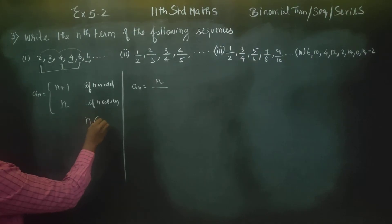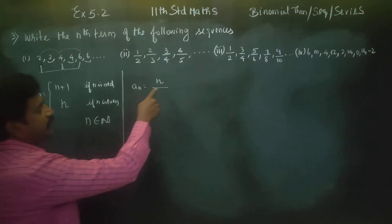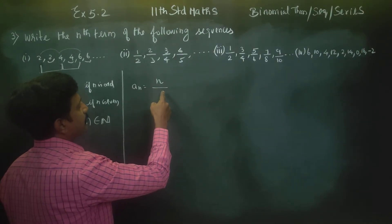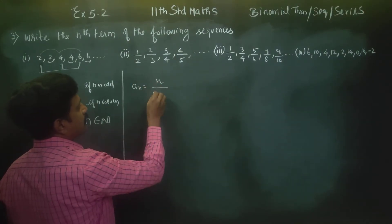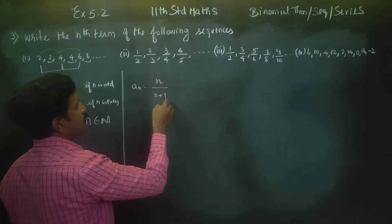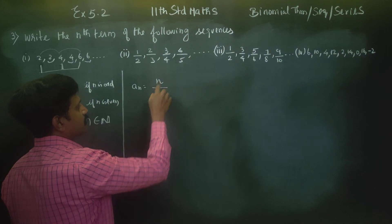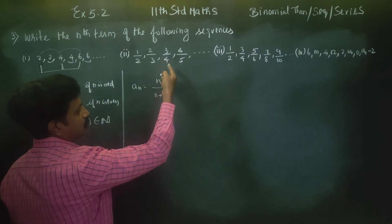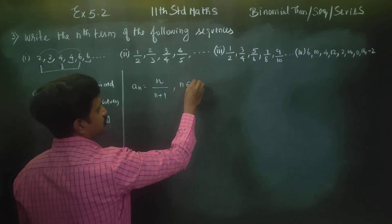2, 4, 6 — to natural numbers, n belongs to natural numbers, not integers. When n belongs to natural numbers: n plus 1 gives us 1 equals 1/2, 2 equals 2/3, 3 equals 3/4, where n belongs to natural numbers.